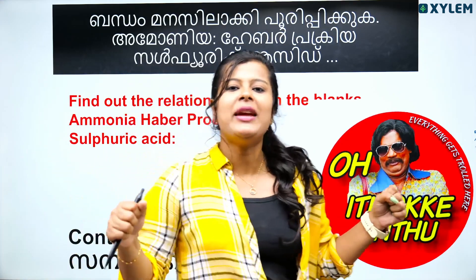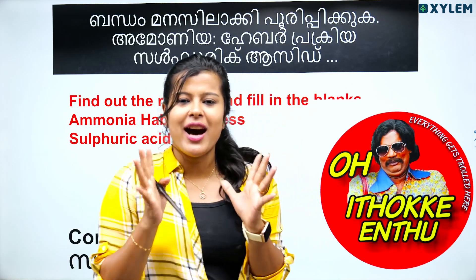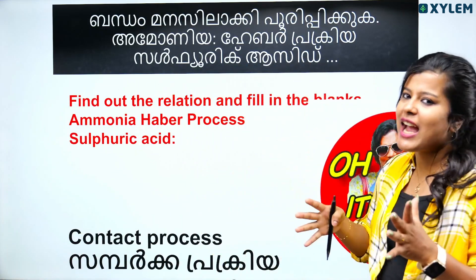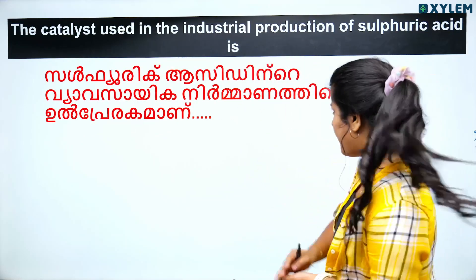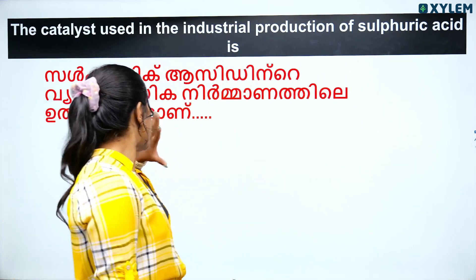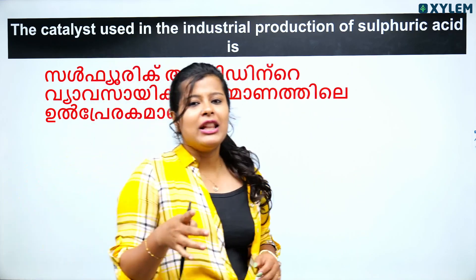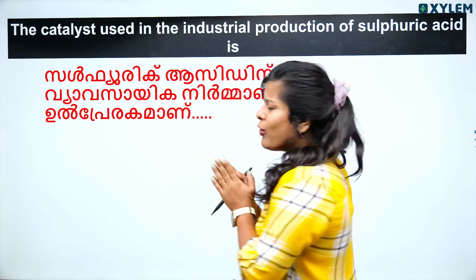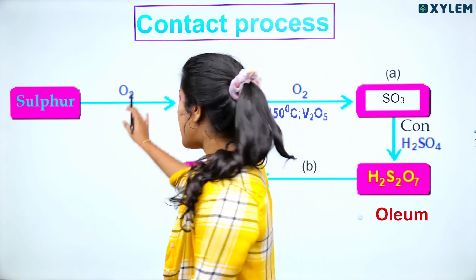It's called sulfuric acid — the King of Chemicals. The catalyst used in the industrial production of sulfuric acid via the contact process is V2O5, Vanadium Pentoxide. We will go through the full contact process.